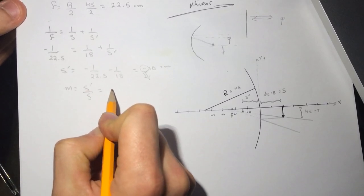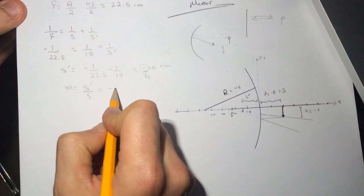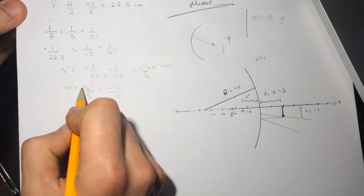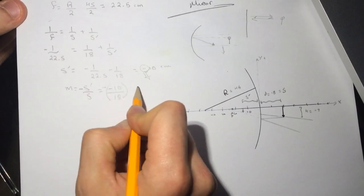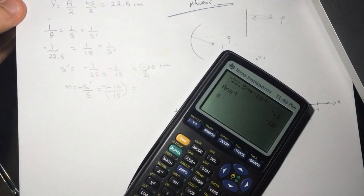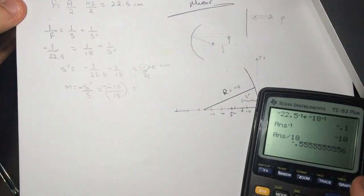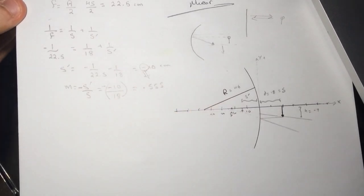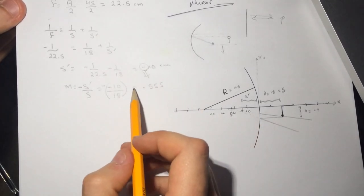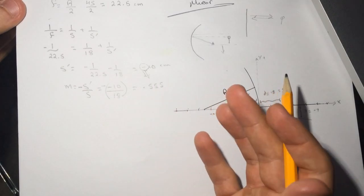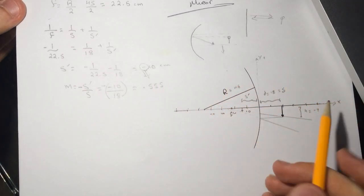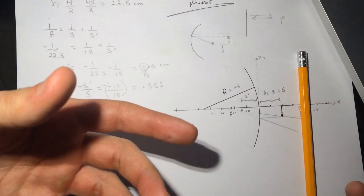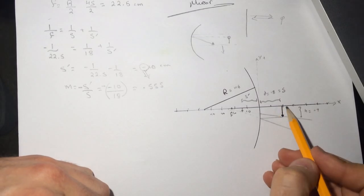Now let's find the magnification as an extra step to understand the problem. Magnification m = -s'/s = -(-10)/18 = 10/18 ≈ +0.555. The positive value tells us the image is upright — it's not flipped — and it's smaller than the original object.